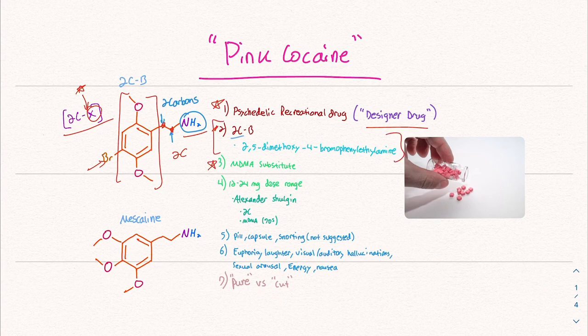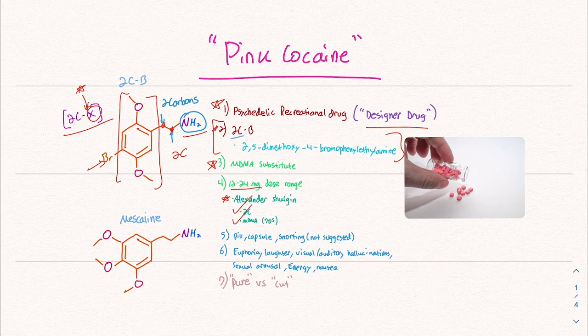It is supposed to be an MDMA substitute. As I mentioned before, it's a designer drug, so it's not quite the same, but it's similar enough. The dose range is 12 to 24 milligrams. The 2C family was synthesized by this genius named Alexander Shulgin. He synthesized the 2C family, along with a whole bunch of other drugs. He's really responsible for the resurgence of MDMA in the 70s, and he's pretty much credited to be the guy that introduced MDMA into the medical field through psychiatrists and psychologists. And today, it's being used as a treatment for PTSD and all sorts of other things. 2C-B closely resembles mescaline, which is peyote, which is a naturally occurring psychedelic.